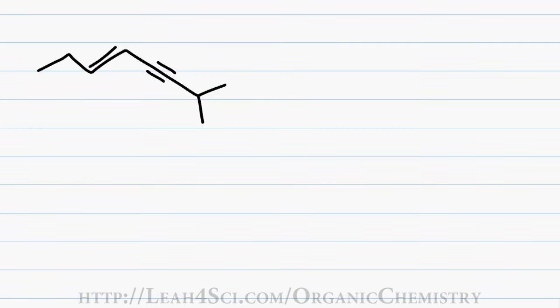Now let's look at this example. The first thing I do is highlight my parent chain and determine which way to number. Going back to the standard IUPAC rules, you have to number the chain so that the substituent gets the lowest number. In this case, I have to start numbering from the right because I have a methyl group on the second carbon.